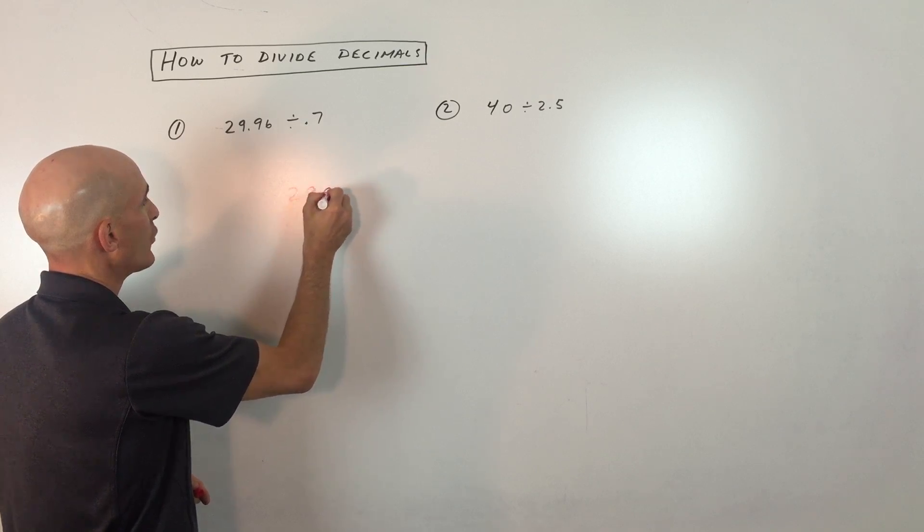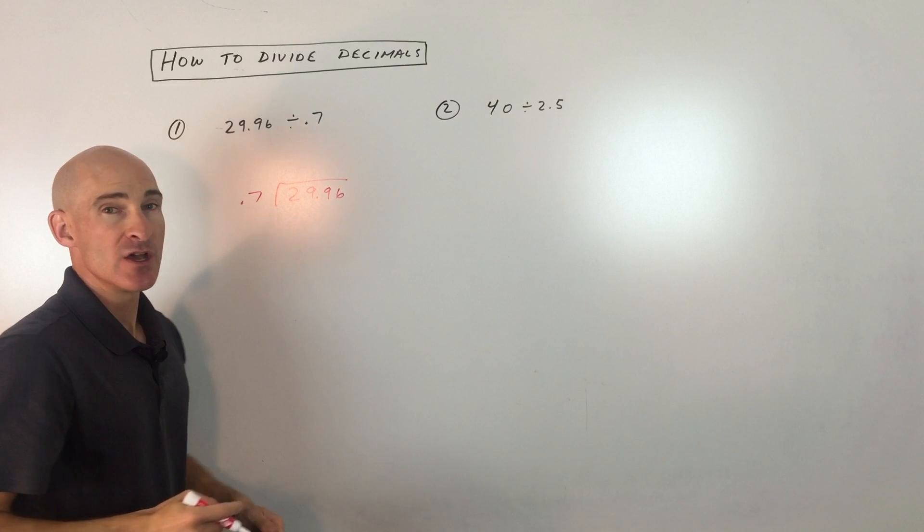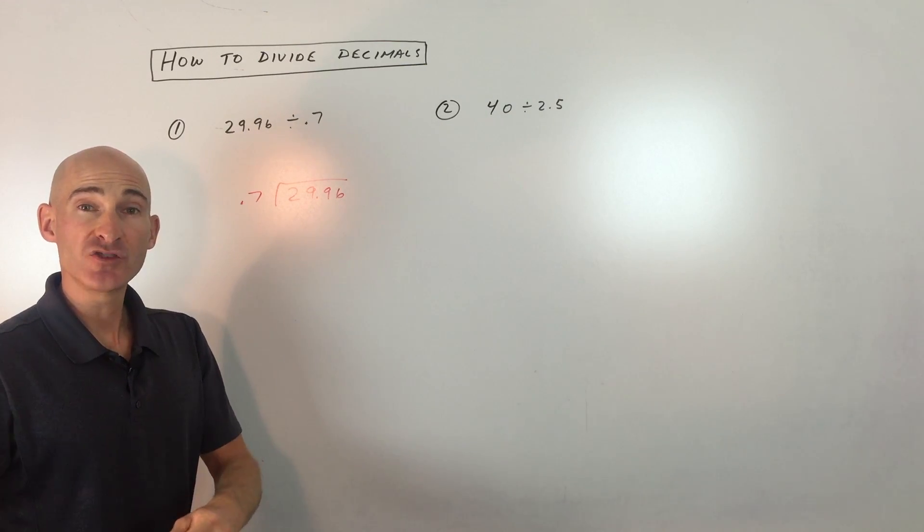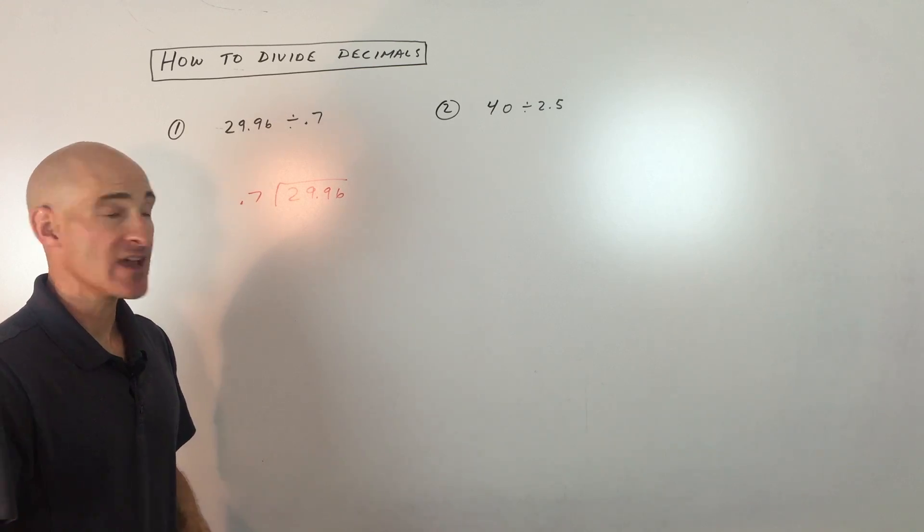We've got 29.96 divided by 0.7. Hopefully you've already learned how to do long division, and now all we're doing is adding this component of adding the decimal in there.